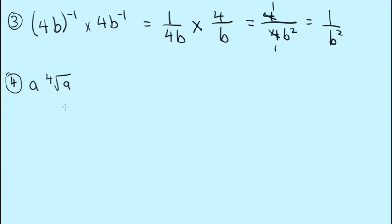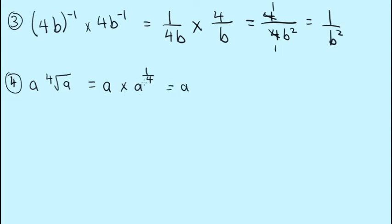The fourth example: a times the fourth root of a. Rewriting the fourth root of a as a fractional index gives a to the one-fourth. Since we are multiplying and the bases are the same, we add the powers: one plus one-fourth equals five-fourths, giving a to the five-fourths power.